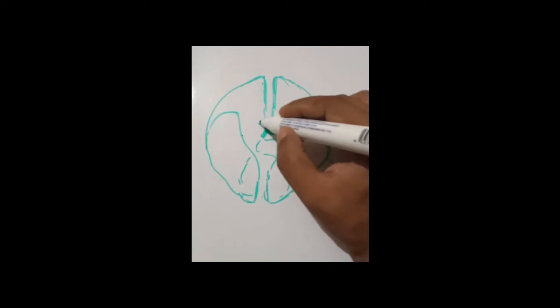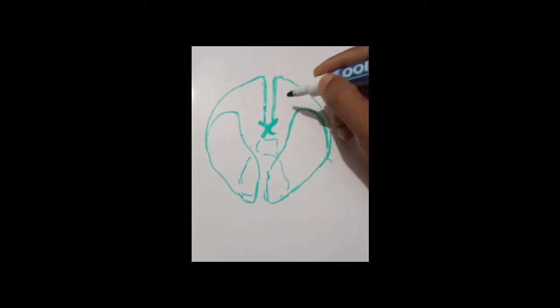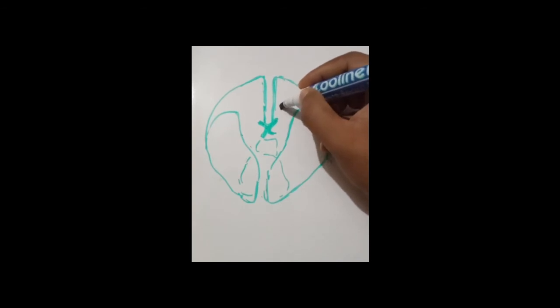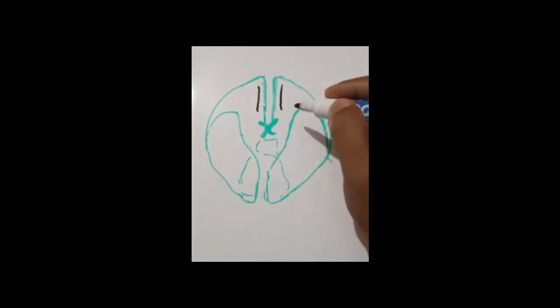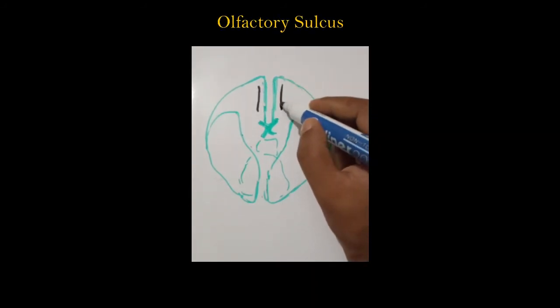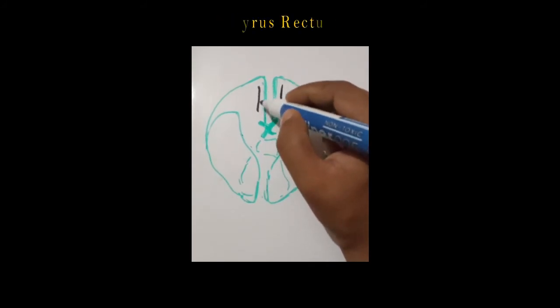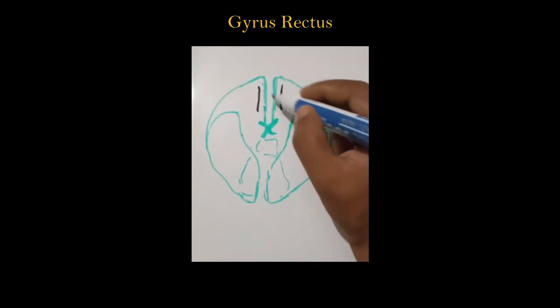Here one sulcus is present, this is termed as the olfactory sulcus. Just medial to the olfactory sulcus, this area is termed as the gyrus rectus, here and here.